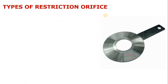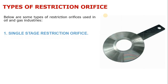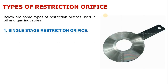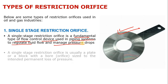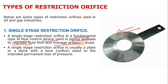There are several types of restriction orifice. The first is the single stage restriction orifice, which has only one stage — one plate with one hole. It is a plate or block with a bore sized to cause an intended permanent loss of pressure. It is installed between pipelines and it is a thick orifice plate, not a thin one, because you have to deal with the pressure.